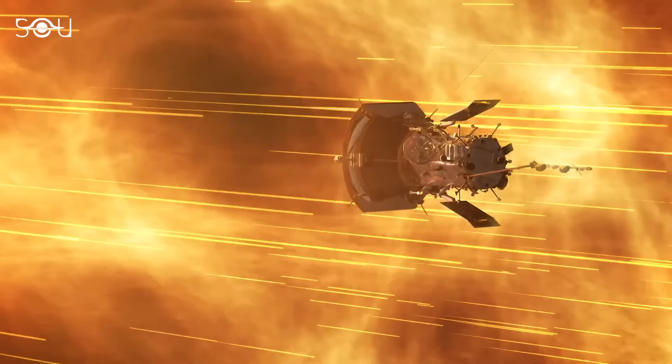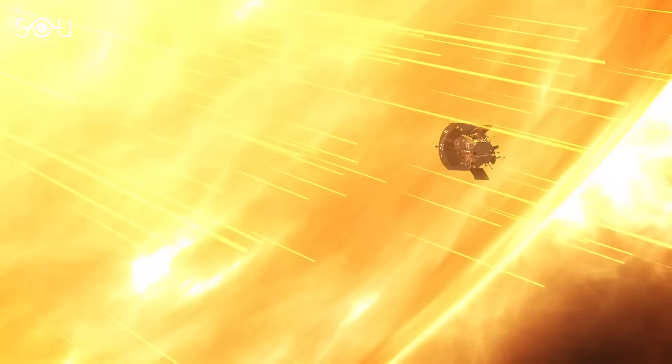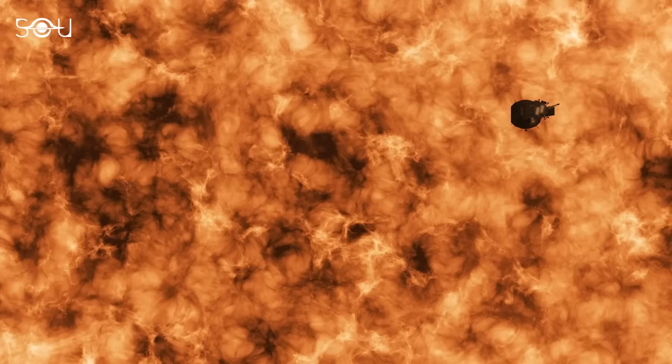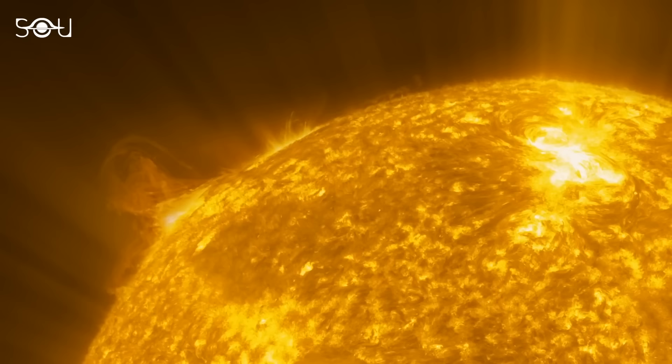But the critical question is, why didn't the Parker Solar Probe melt when it touched the sun? No metal can withstand such high temperatures. So, how did Parker manage to survive after plunging into the solar atmosphere? How is it still functioning efficiently after going through such an extreme environment?